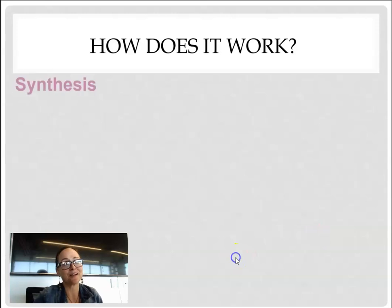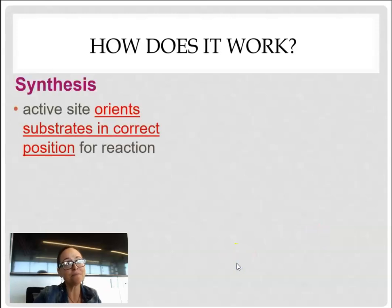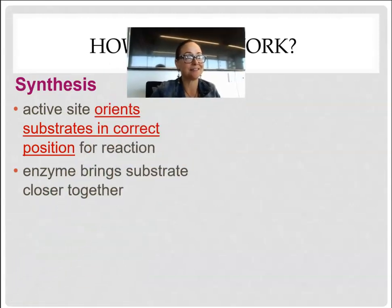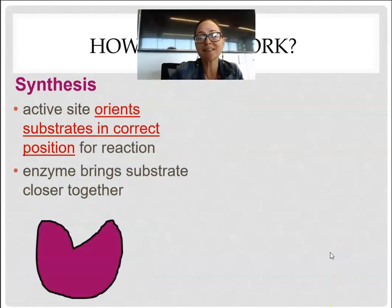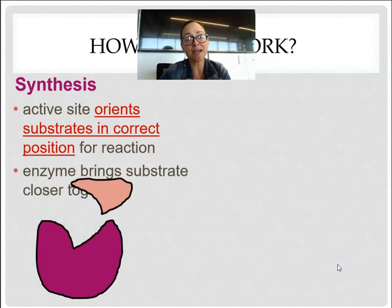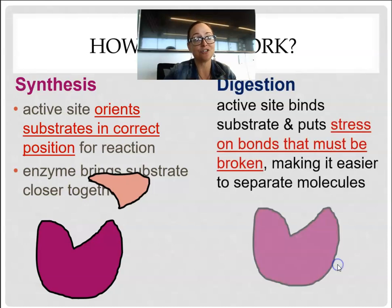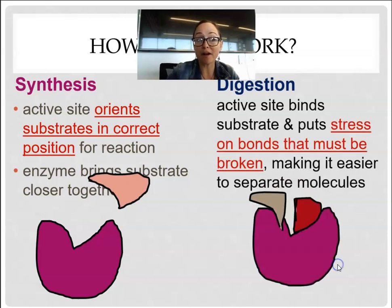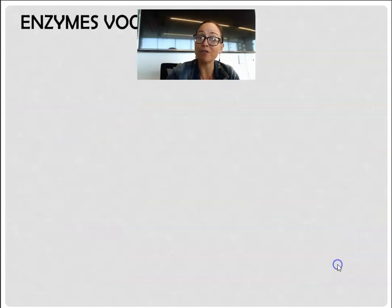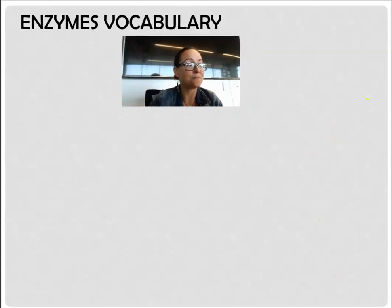So how does it work? When an enzyme performs chemical reactions, there are basically two options: you can have synthesis, where a molecule is being built by the enzyme, or you can have digestion, where the molecule is going to be broken apart. Let's go ahead and talk about enzyme vocabulary and how this works.